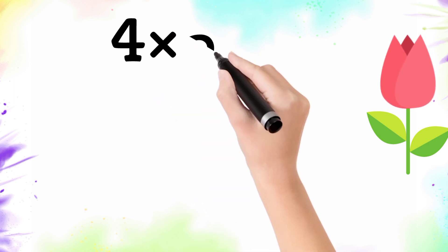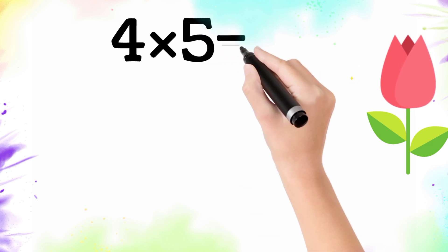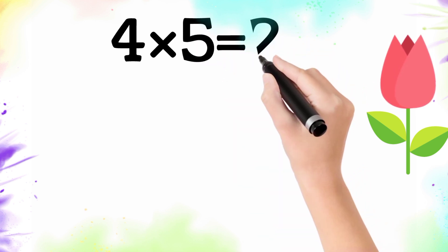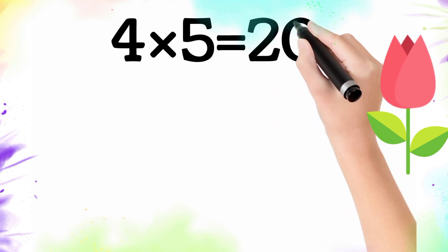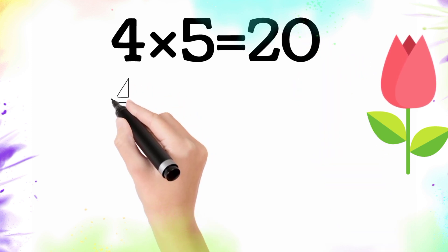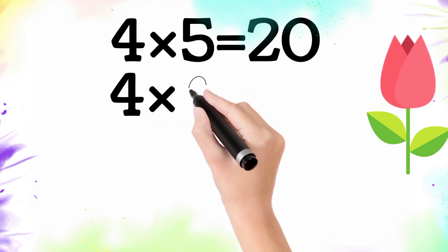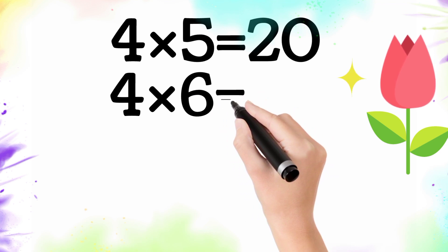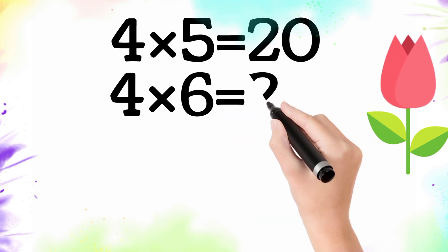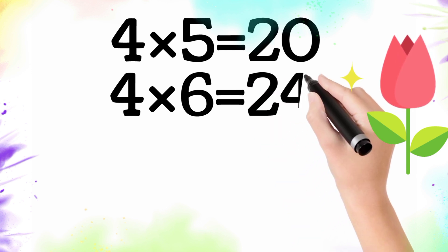Four multiply by five is equal to twenty, so four times five is twenty. Four multiply by six is equal to twenty-four, so four times six is twenty-four.